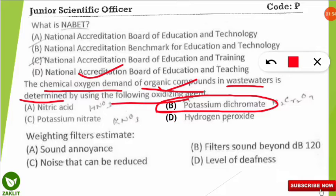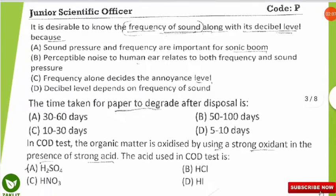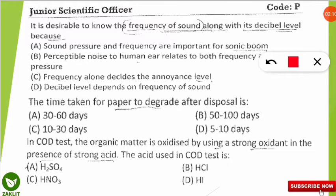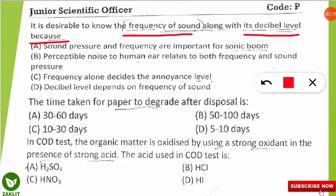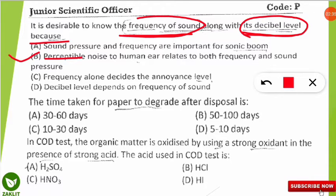The next question about the waiting filter is homework for you — mention in the comment section which is the correct option. Moving on, the next question is analytical: it is desirable to know the frequency of a sound along with its decibel level because of which of the following reasons? Read every option carefully — the correct option is option B.